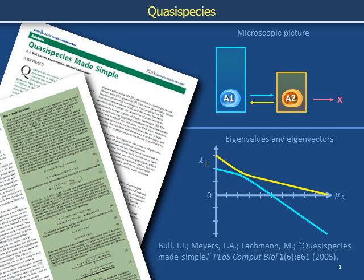These slides outline how eigenvalue-eigenvector analysis can be used to study the green box in the paper Quasi-Species Made Simple by authors Bull, Myers, and Lachman in PLOS Computational Biology from 2005. Walk through the slides, work through the green box on your own with pencil and paper, and then play this video again for review.